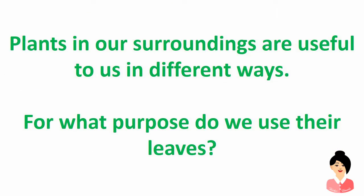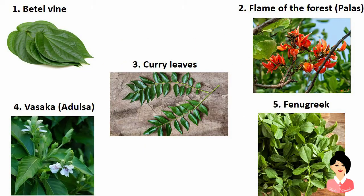Now let's learn about plants. Plants in our surroundings are useful to us in different ways. For what purpose do we use their leaves? Betel vine, also called pan, is used as a mouth freshener. Flame of the forest, Palas, is used to cure digestion problems. Curry leaves, also called kadipatta, is used in cooking. Vasaka, also called adulsa, is used to cure cold and cough. And fenugreek, also called methi, is used to prepare vegetables.